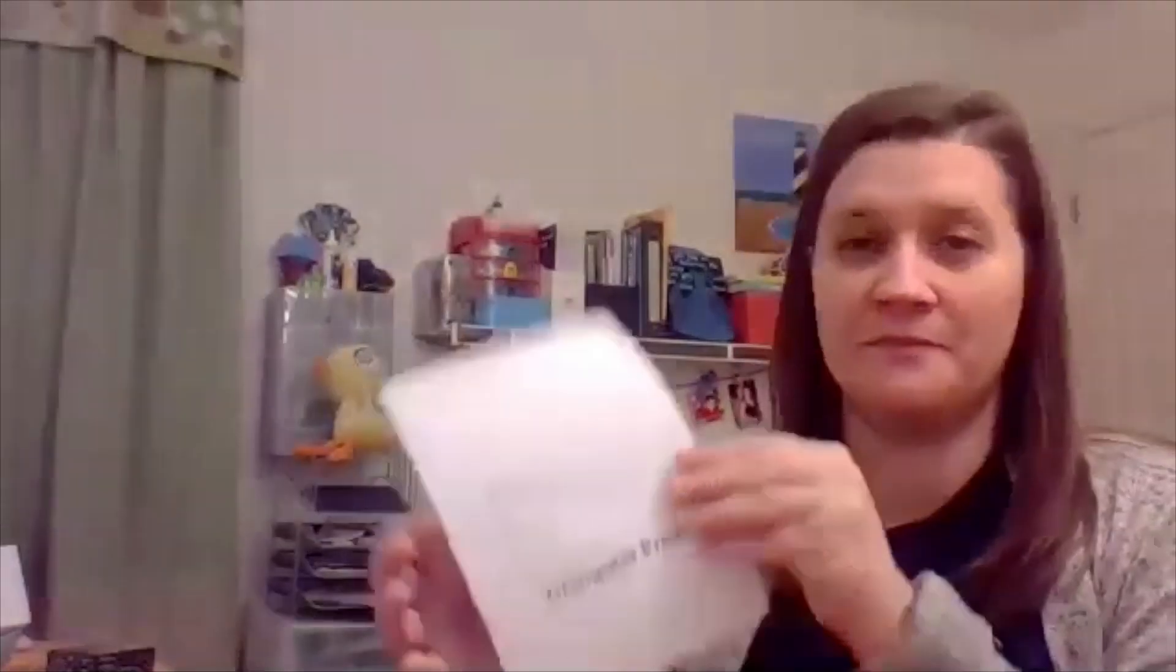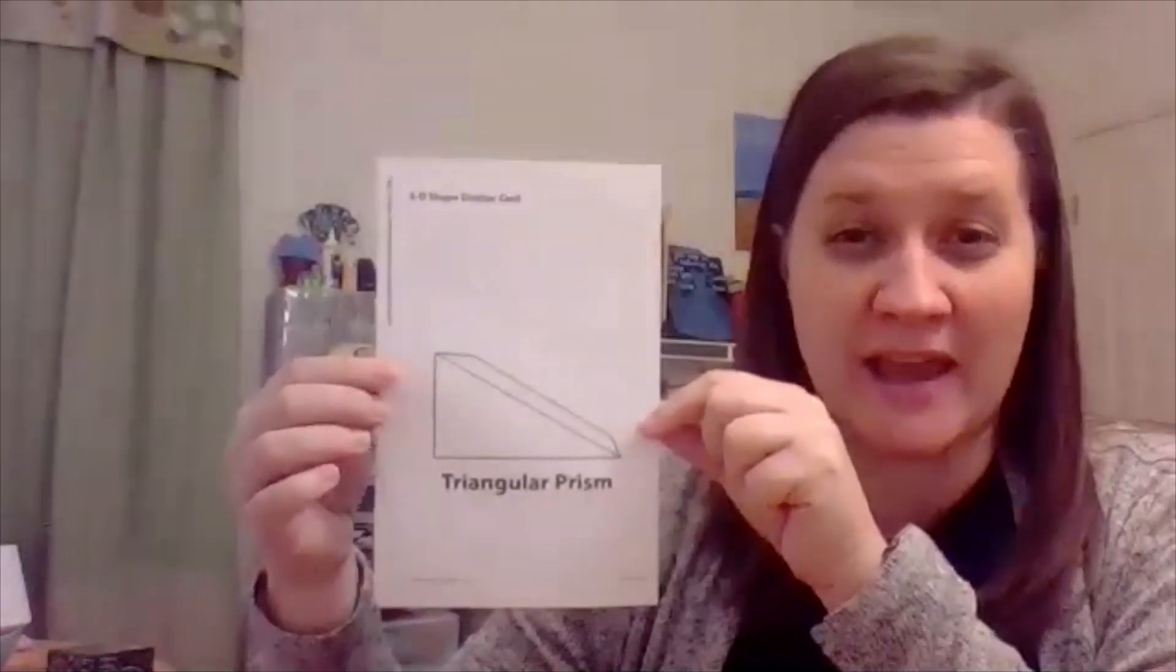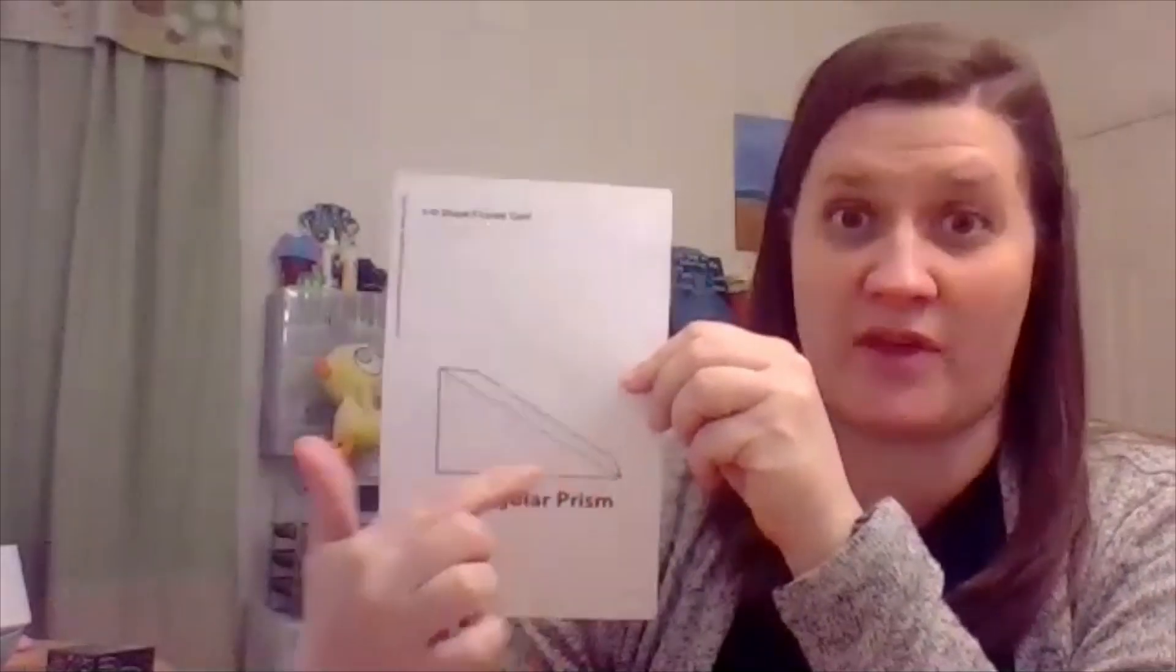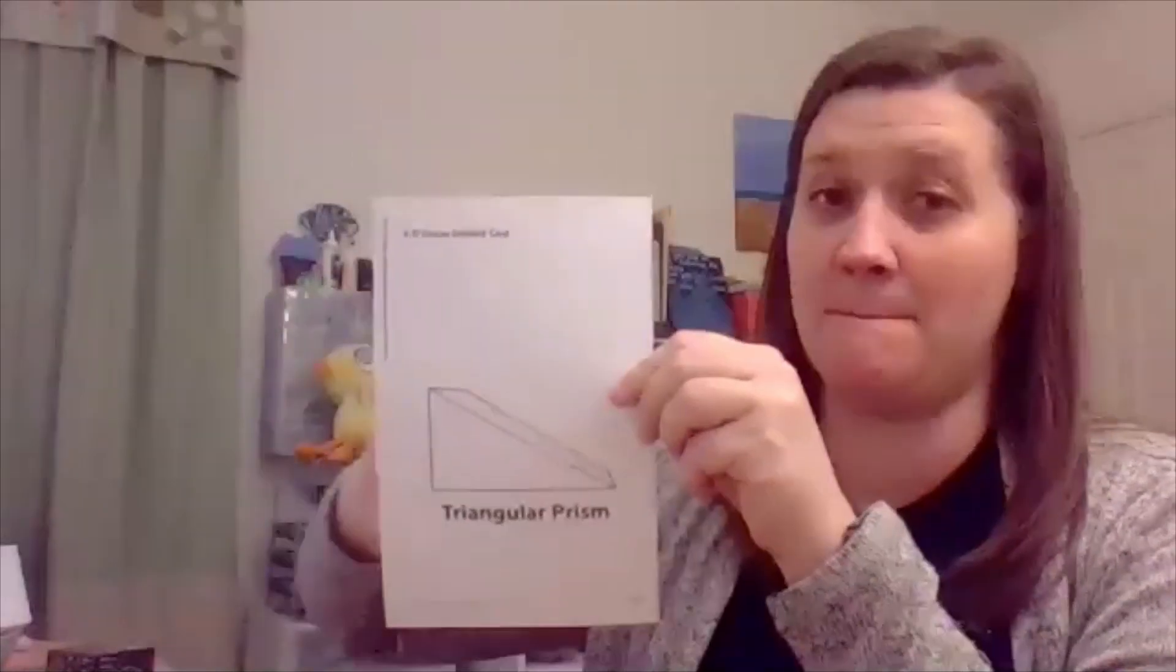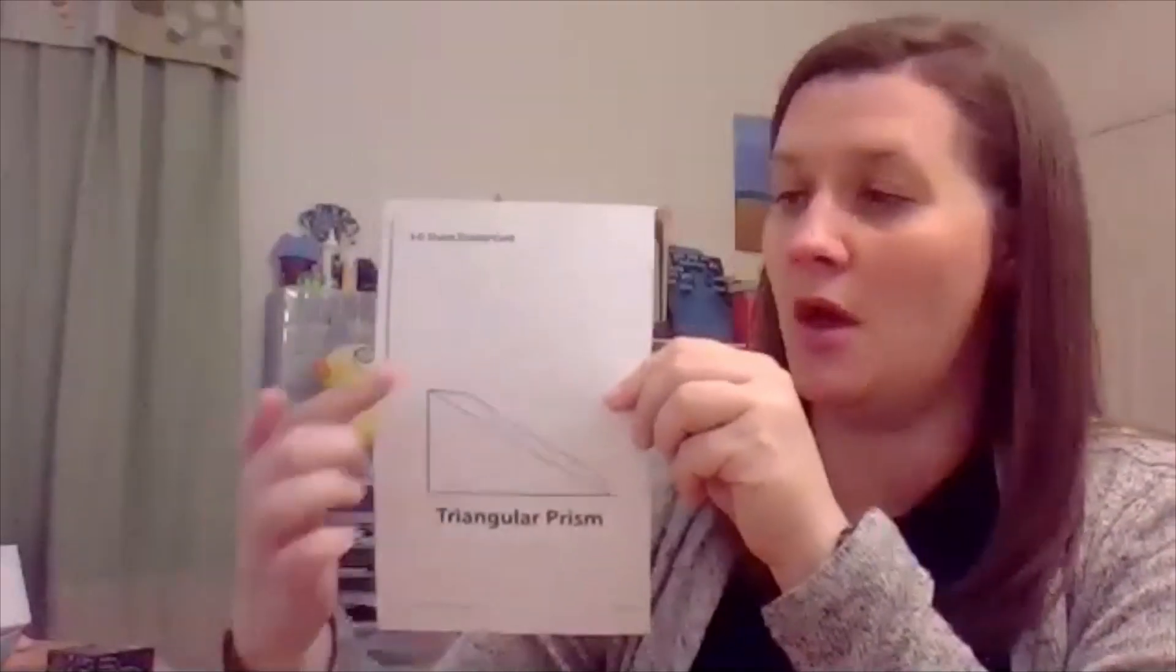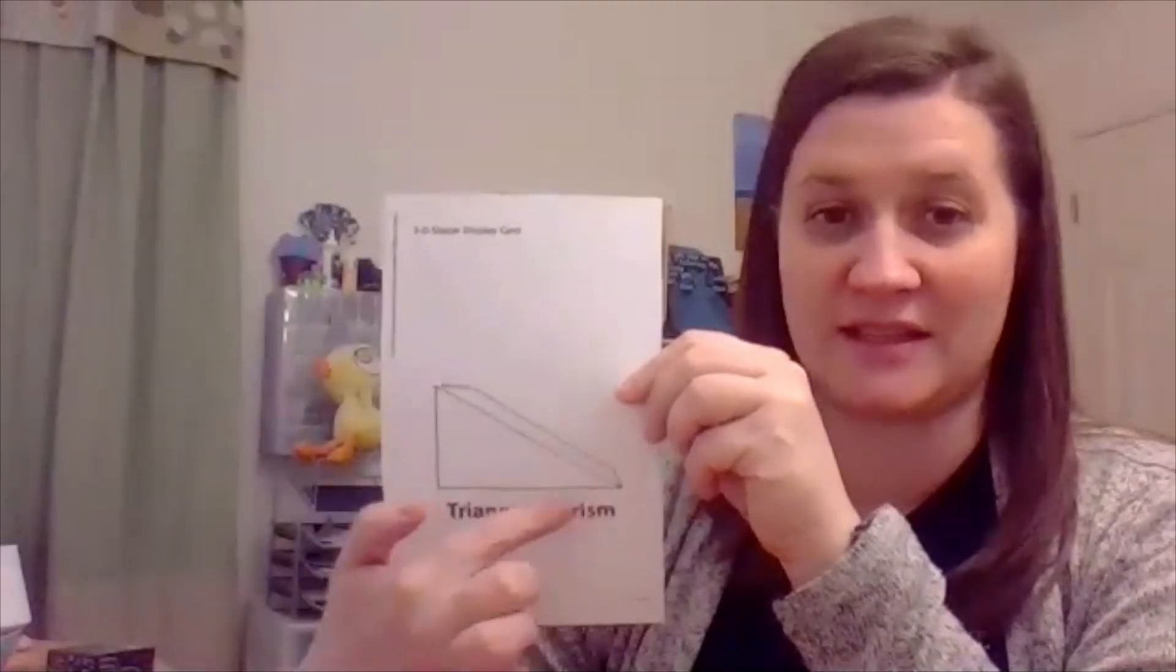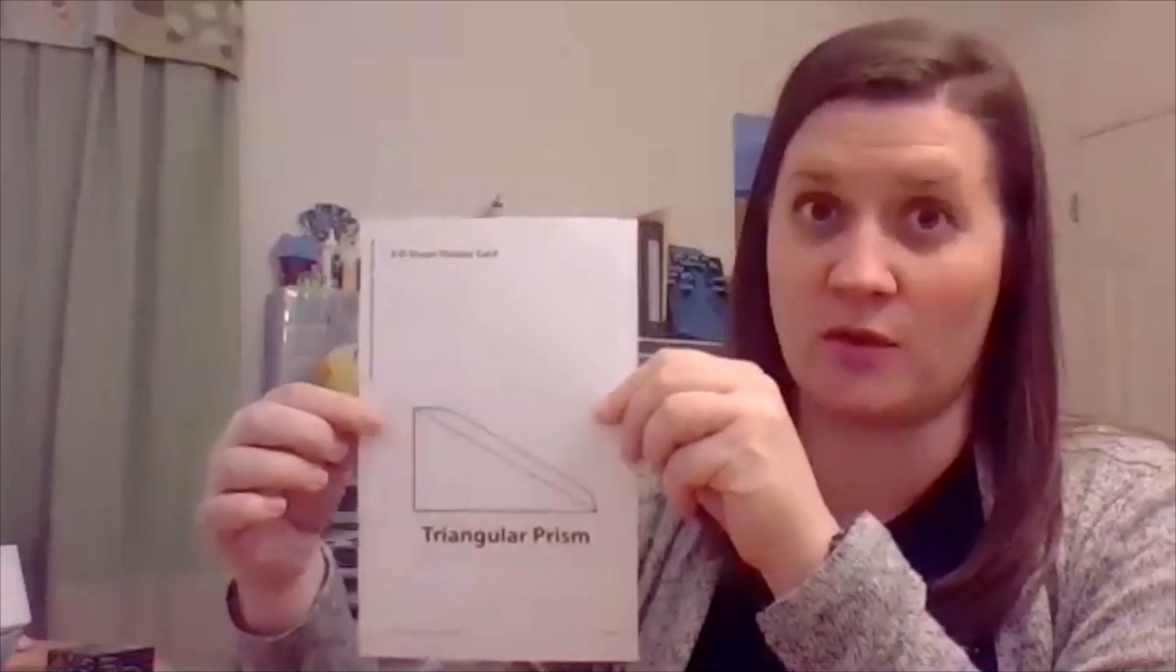I also have a challenge for you. I have one more card of a shape here that I couldn't find any in my house. This shape is a triangular prism. It has triangle faces, two of them, one on this side and then the back would be a triangle also. But all of the rest of the faces are going to be rectangles.